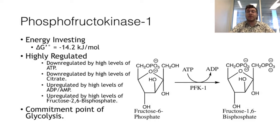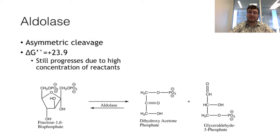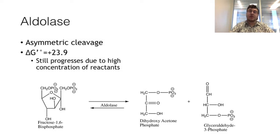PFK1 prepares fructose-1,6-bisphosphate to split. The fourth step is catalyzed by aldolase, which is nearing the end of the preparatory phase. Aldolase splits fructose-1,6-bisphosphate asymmetrically into two three-carbon molecules, each of which is phosphorylated. The reverse reaction is an aldol condensation reaction. This reaction is not the most favorable, but the high concentration of reactant and low concentration of products pushes it forward.